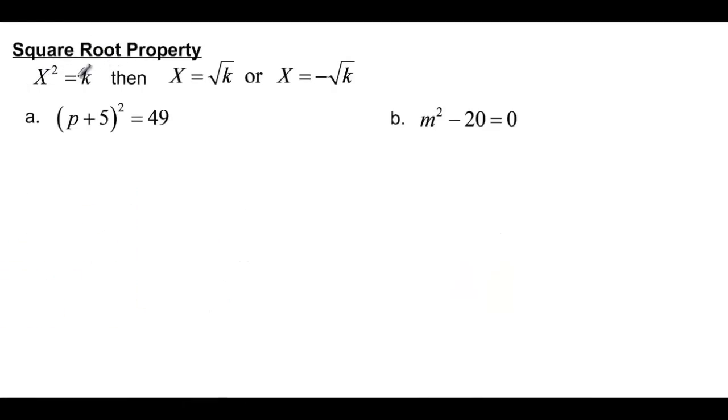So if that's true, that means that x is equal to the square root of k, or it could also be the opposite of square root of k. For example, before we do our problems, if I take 2 and I square that, I get 4. But if I take negative 2 and I square that, I also get 4. So that's why you have to have the positive and the negative.